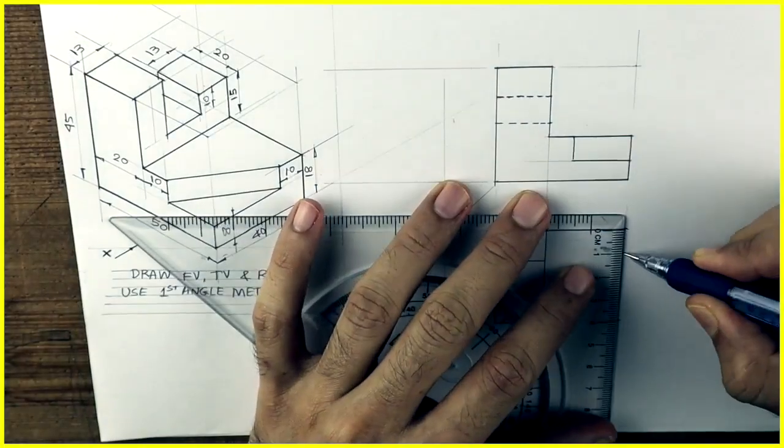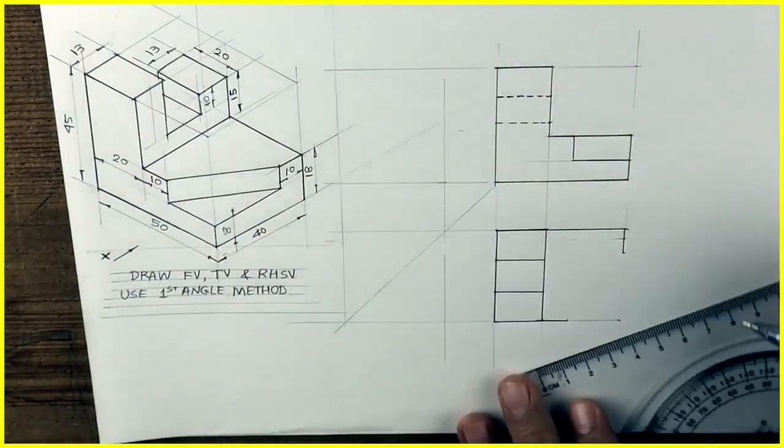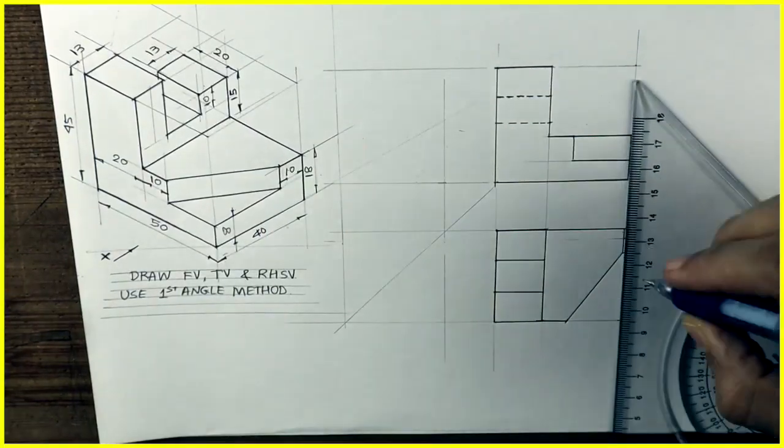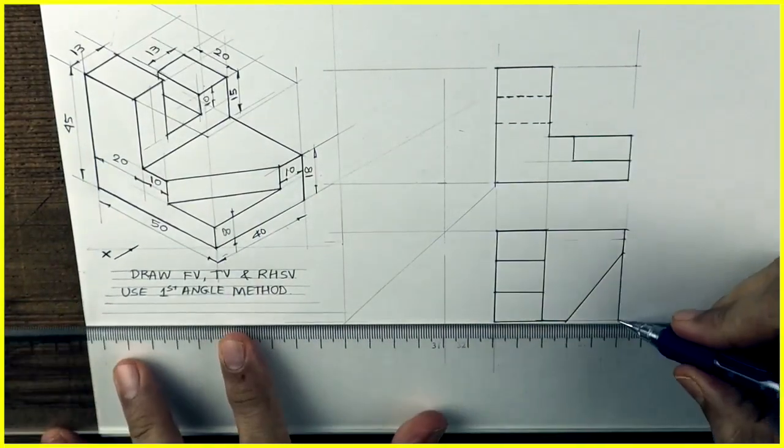Then this is 10. This is also 10. Join this. So we got the triangle part as well.